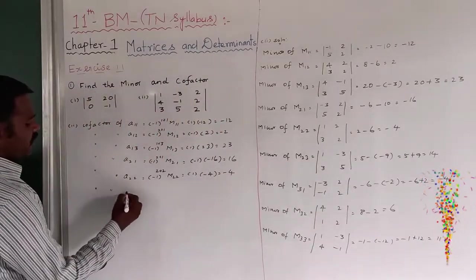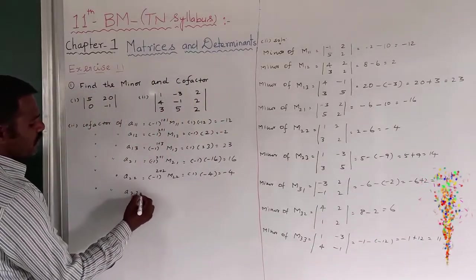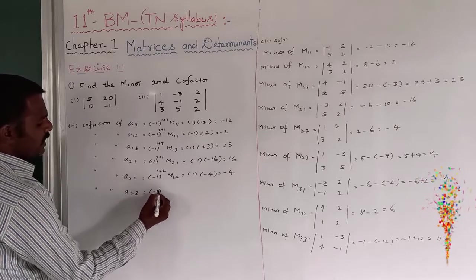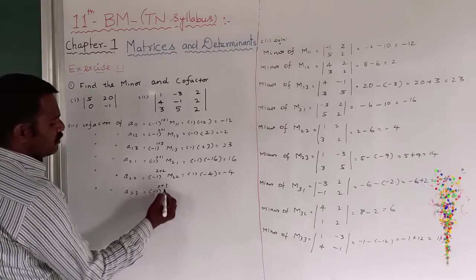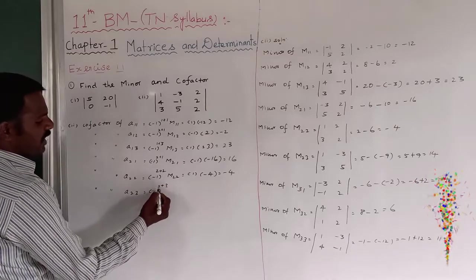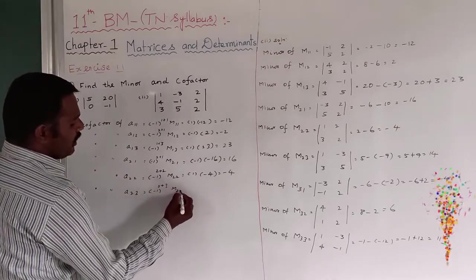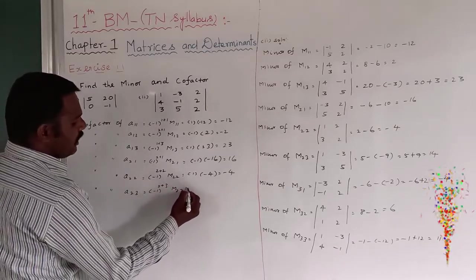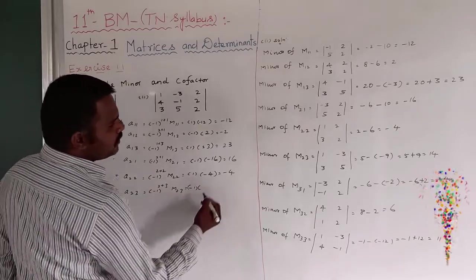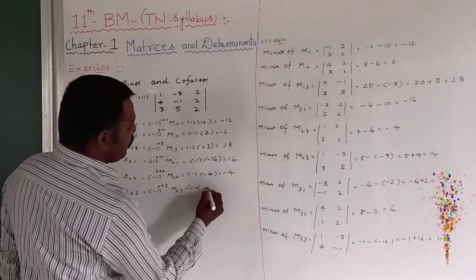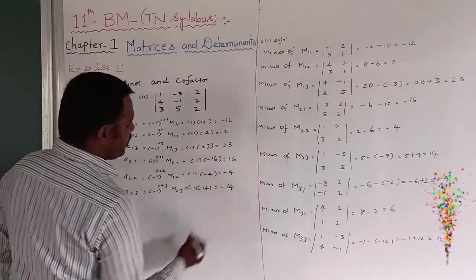Cofactor of a23, second row third column: 2 plus 3 equals 5, so it is going to be minus 1. Therefore minus 1 into M23. M23 is equal to 14, so therefore the cofactor is minus 14.